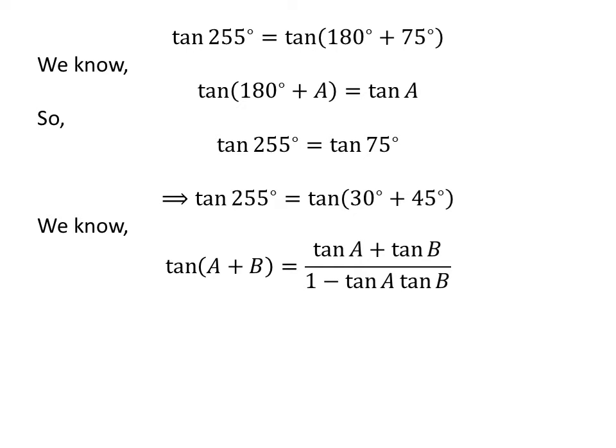We know the trigonometry identity: tangent of A plus B is equal to tangent of A plus tangent of B, upon 1 minus tangent of A times tangent of B. The proof of this identity is explained in the video appearing in the upper right corner, and the link is also given in the description.